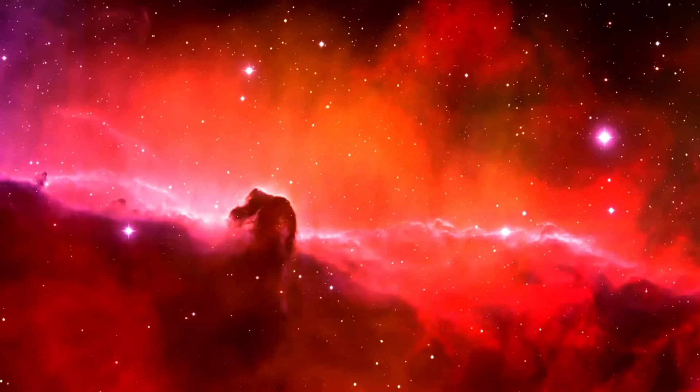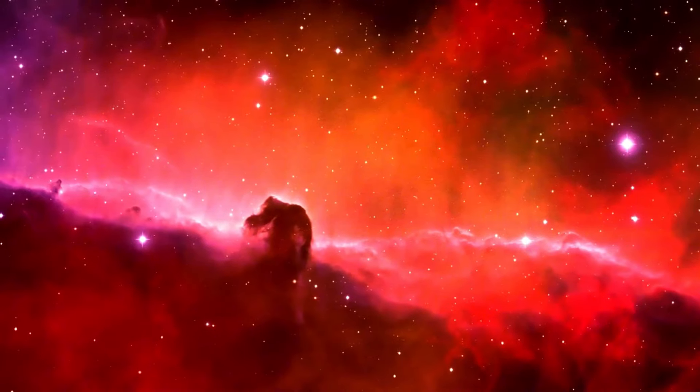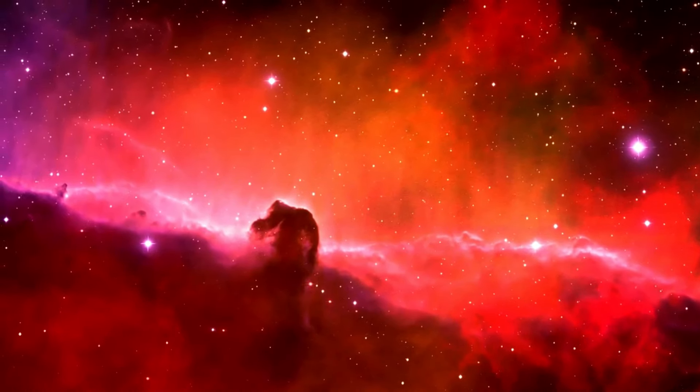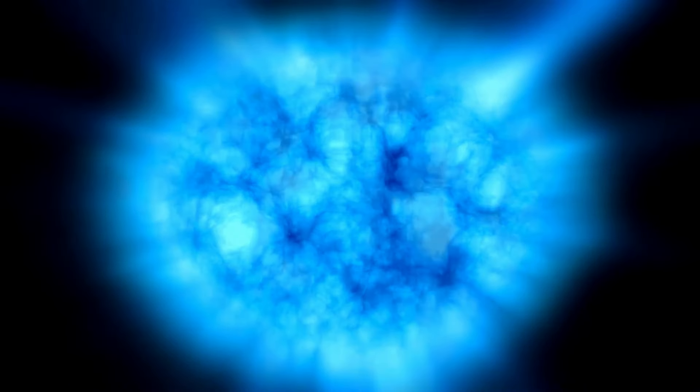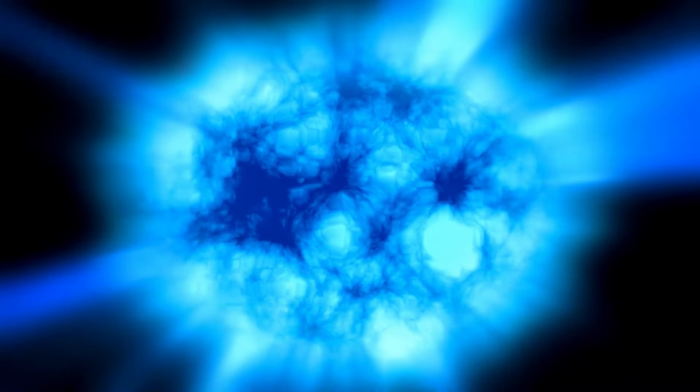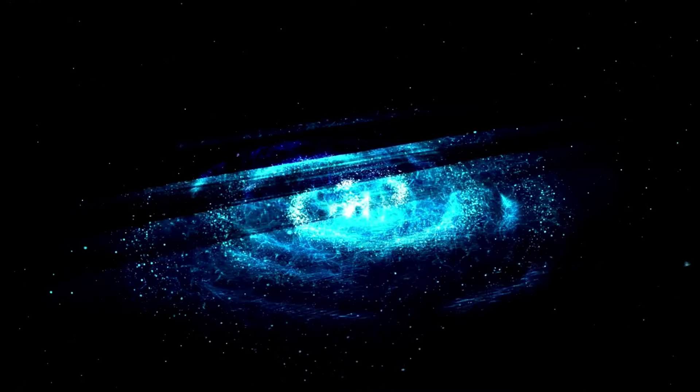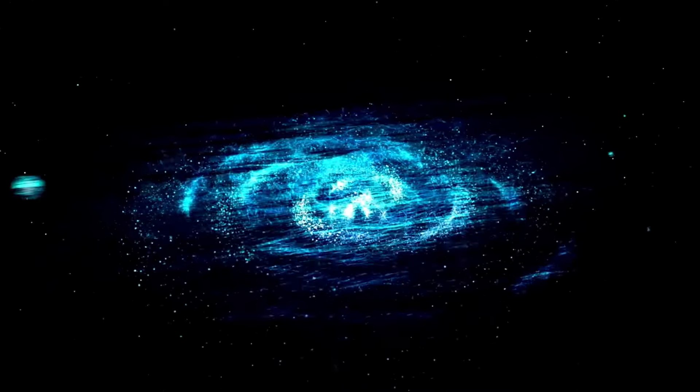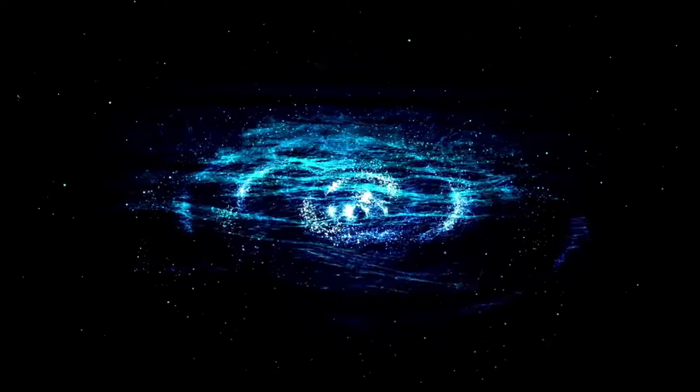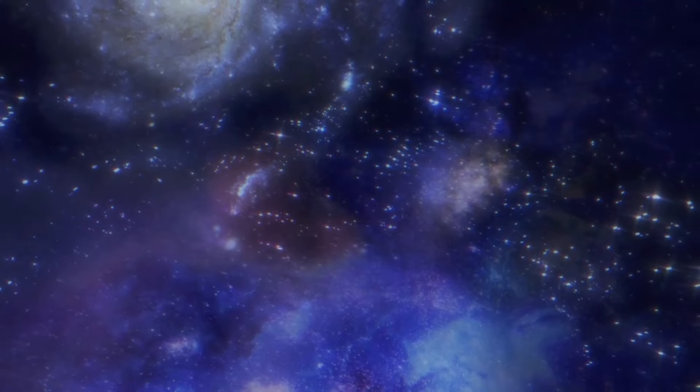According to general relativity, understanding the universe means thinking about it as a four-dimensional entity, combining three dimensions of space and one of time. In this framework, massive things like stars, planets, and even us influence how reality is shaped around us. Envision spacetime like a big stretchy blanket. When something heavy like Earth is placed on it, it makes an indent in the blanket. If you place something smaller like a ball close to Earth, it will move toward the dent.